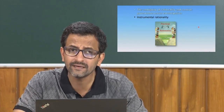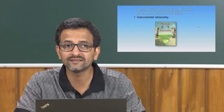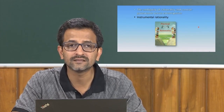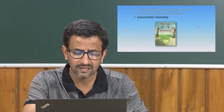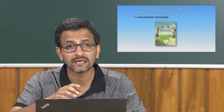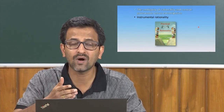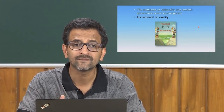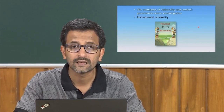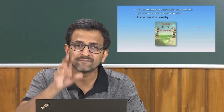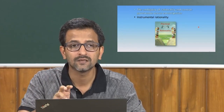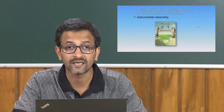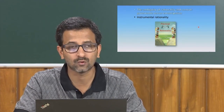Therein lies the ambiguity of rationality and control — governance versus emancipation. In the last lecture, we discussed the difference between instrumental rationality on the one hand and substantive rationality on the other. Substantive rationality emphasizes on methods and means, whereas instrumental rationality emphasizes on ends, objectives, aims, and goals.